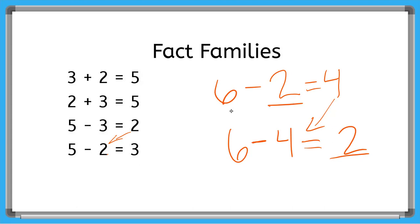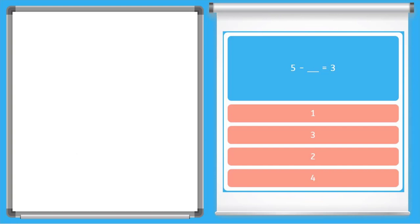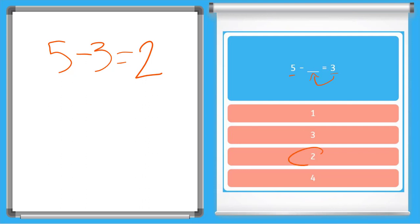Let's try this with some of our problems from the game. Here I have 5 minus a number equals 3. So if I just move that 3 over, I will get the other problem in our fact family, and this will help us find the unknown number. 5 minus 3 equals 2. And there is our answer.